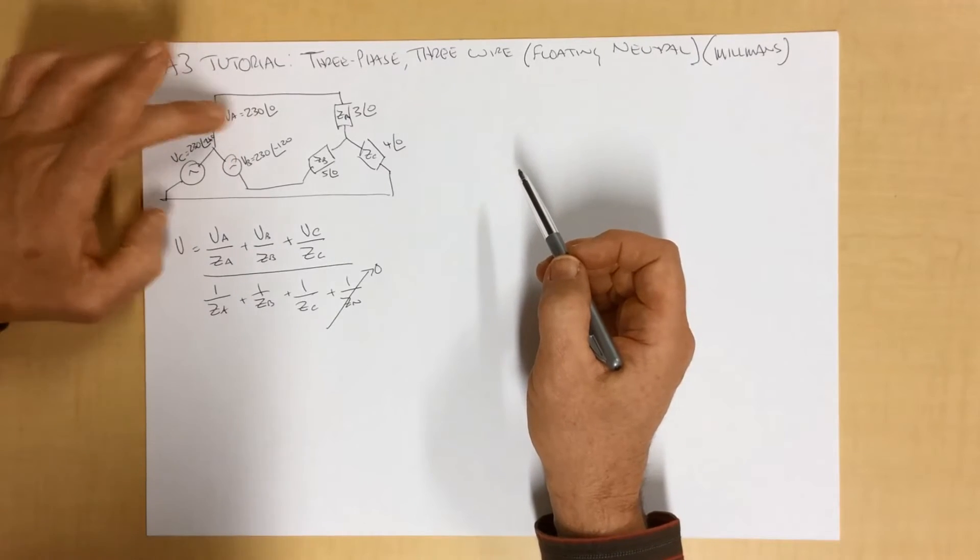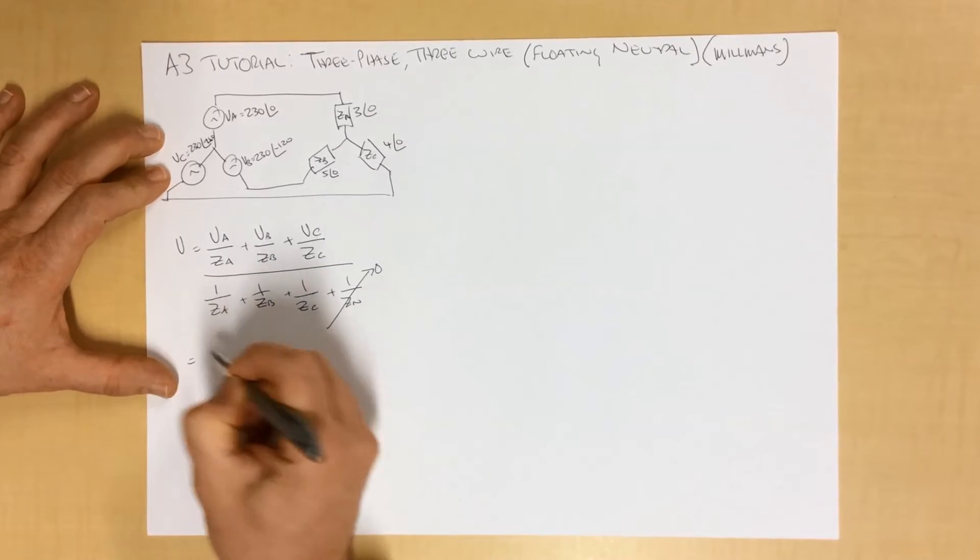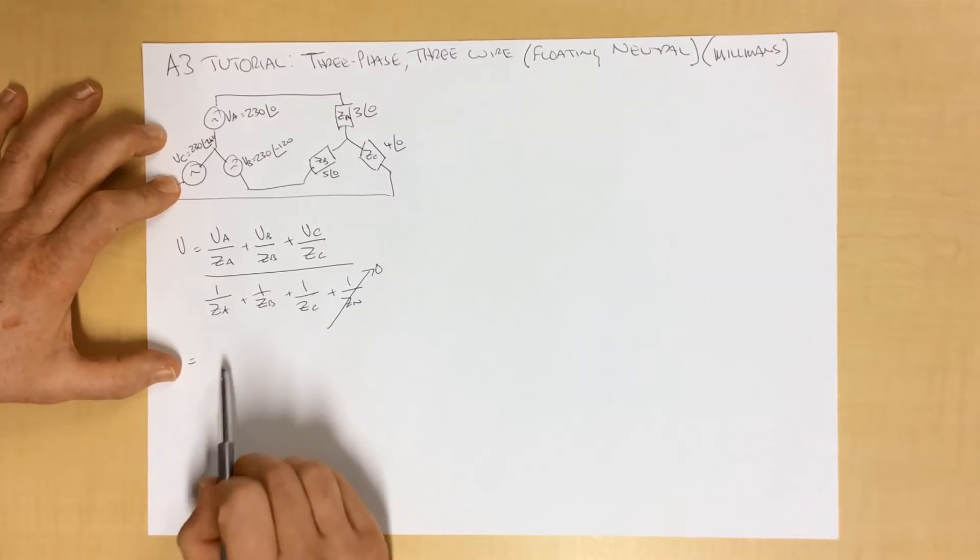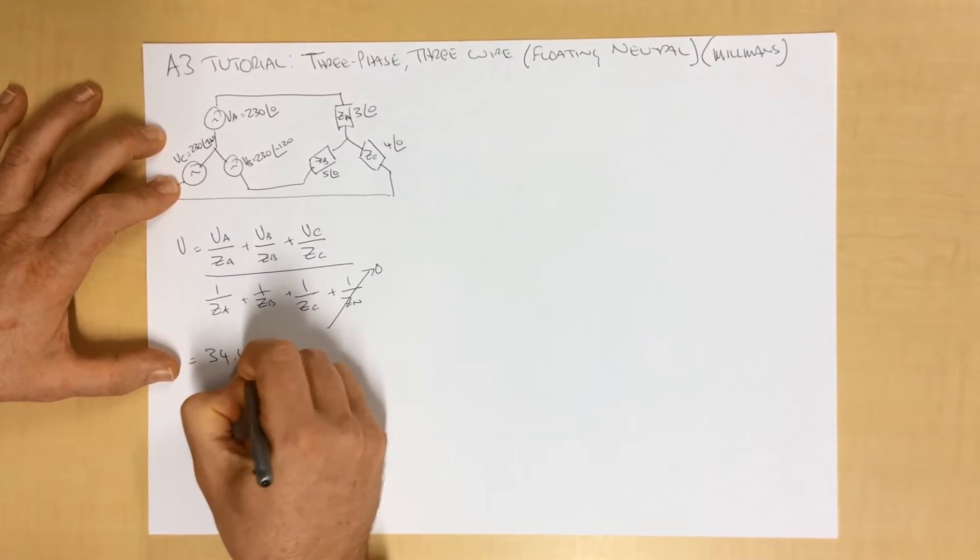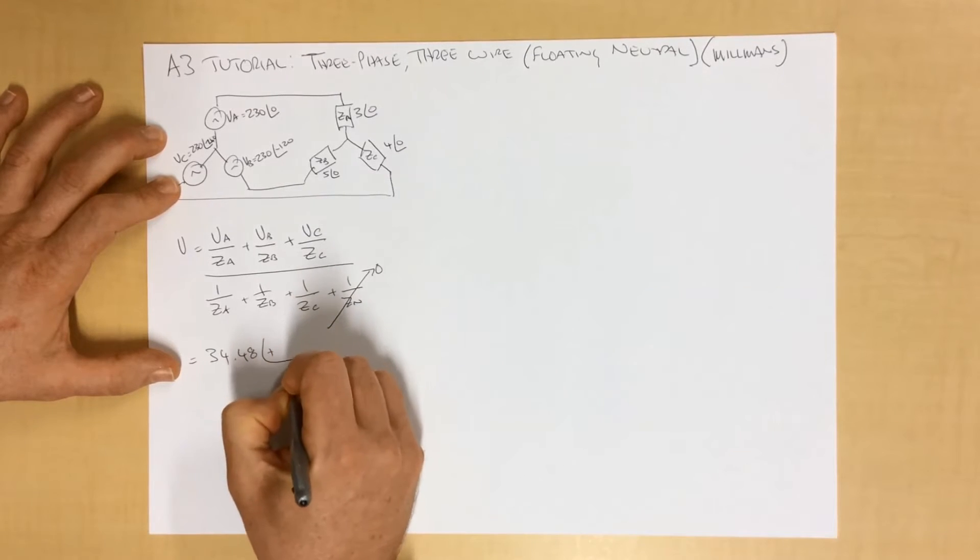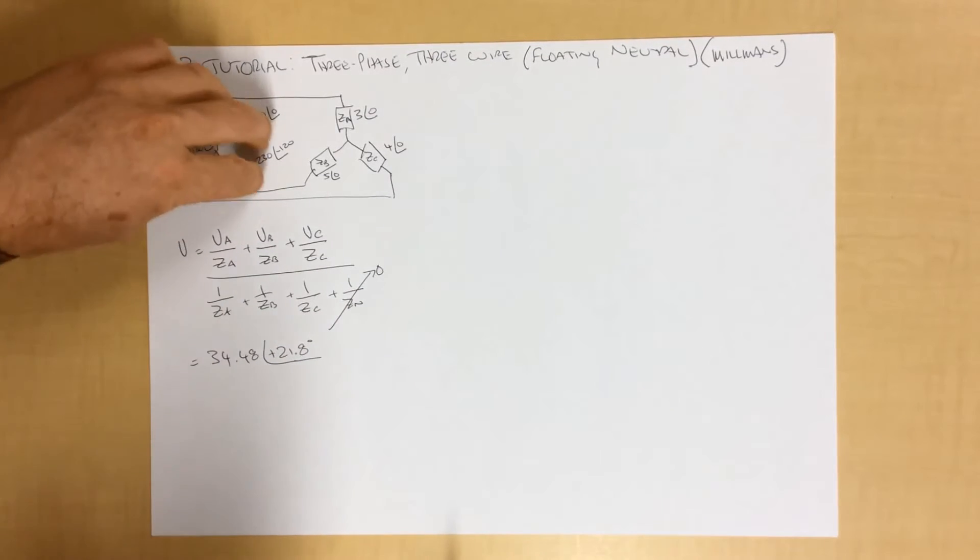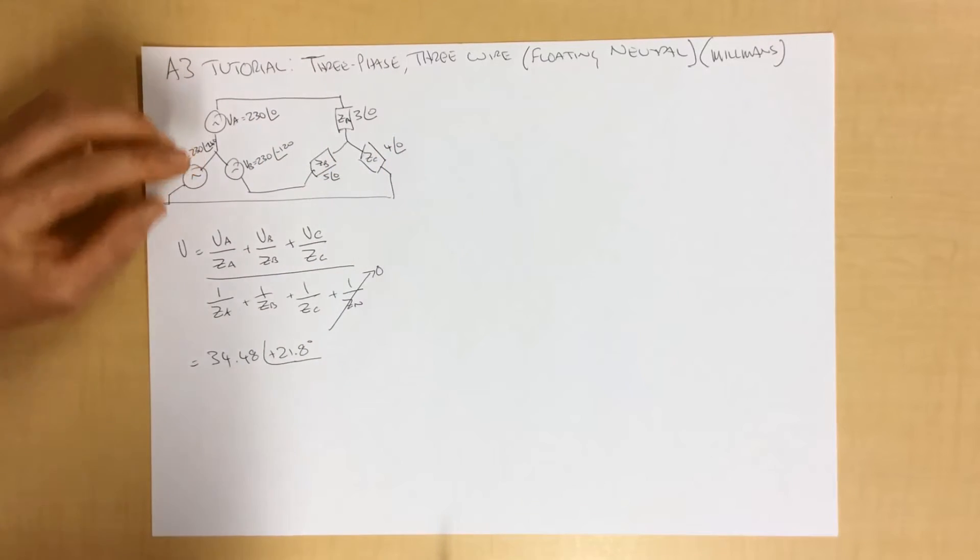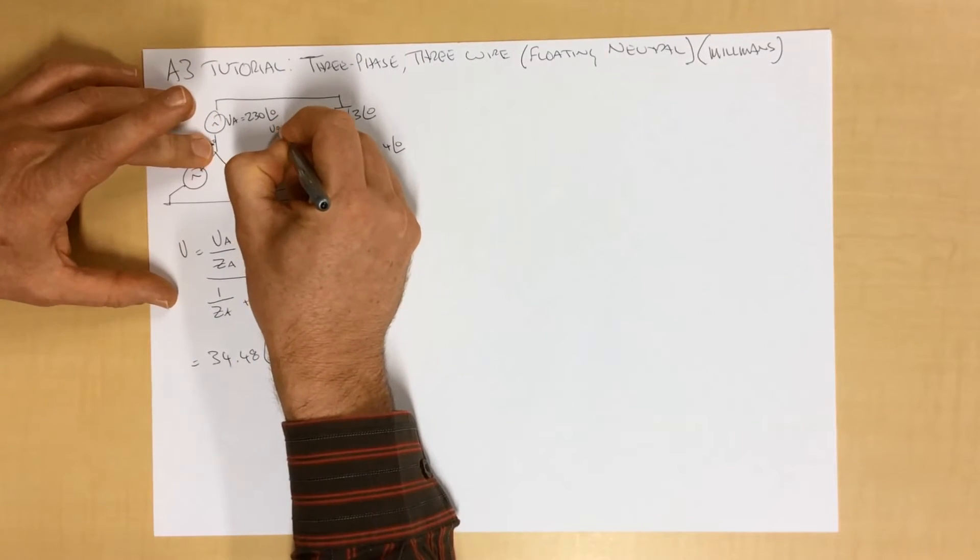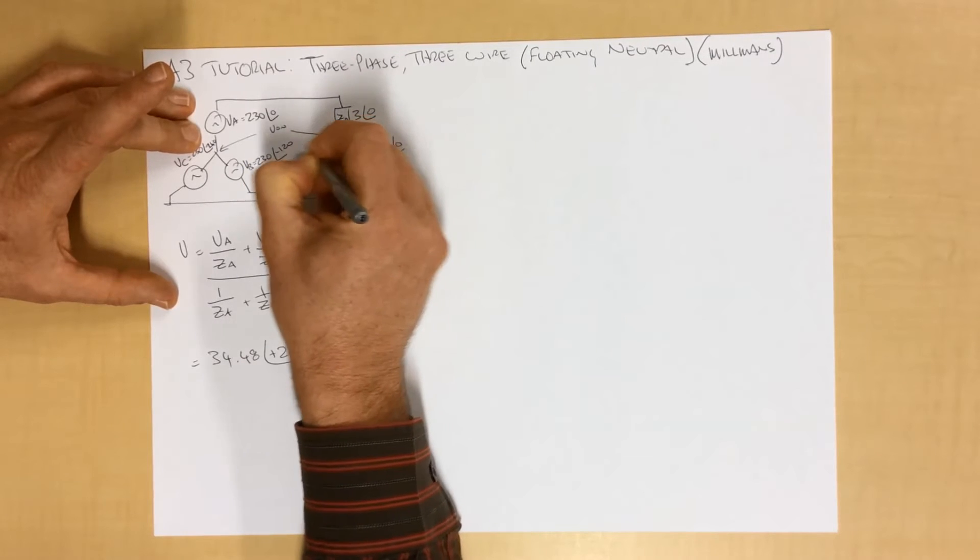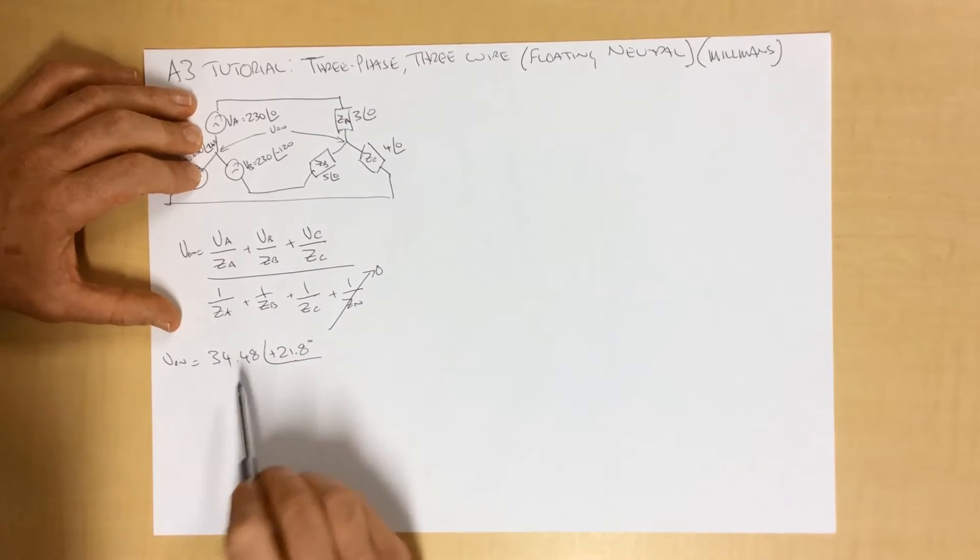Now if we go through and insert all these numbers into this expression, which I'm not going to go through, I'll let you go and do that calculation, but I'll tell you that that point here, this solves down to a voltage, using these particular numbers, of 34.48 at an angle of plus 21.8 degrees. Using this perfectly balanced supply and this unbalanced load, Millman's theorem tells us that voltage potential between here and here is 34 volts at an angle of 21 degrees.